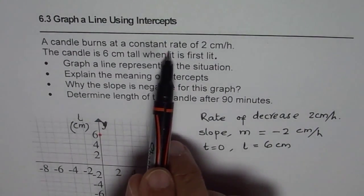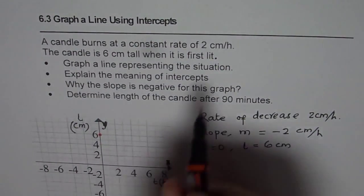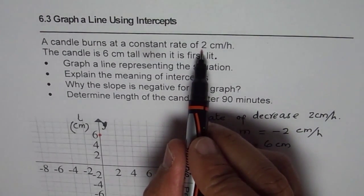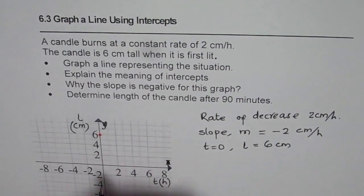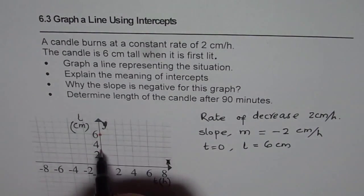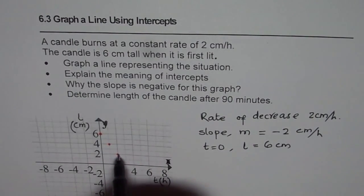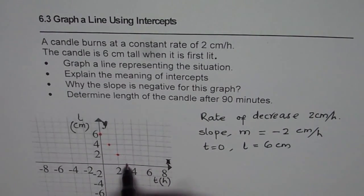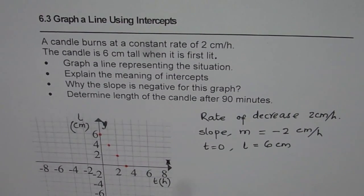It burns at a constant rate of 2 hours. That means every hour, the length decreases by 2 cm. So every hour, it decreases by 2 cm. So one hour, 2 cm. Another hour, another 2 cm. Another hour, another 2 cm. Another hour, will it go negative? Hmm, this is what we have to think about. Okay, let's stop there for the time being.